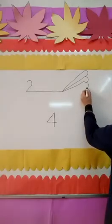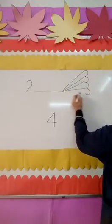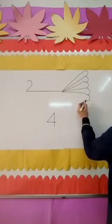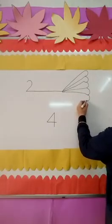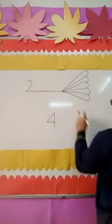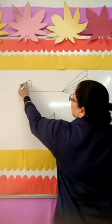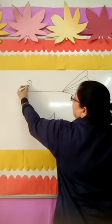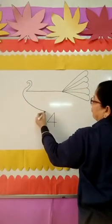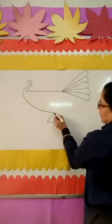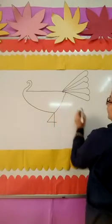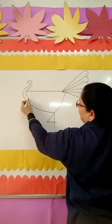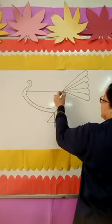Number 3. And join lines like this. Draw a line like this and join the number 4. And one more slanting line like this.